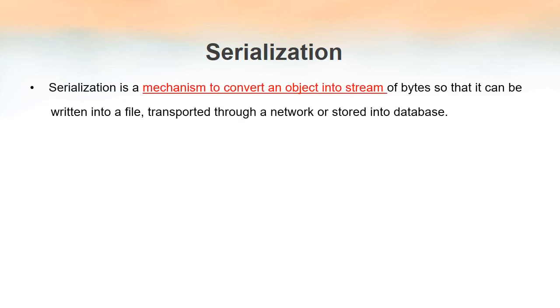How can we define serialization? Serialization is a mechanism that is used to convert an object into a stream of bytes. What is the need of converting an object into a stream of bytes? So that it can be written into a file, or it can be transported through a network, or it can be stored into a database. We all know that objects are instances of classes, and an object will have all the methods and variables defined inside the class. So converting it into a stream of bytes is of great advantage.